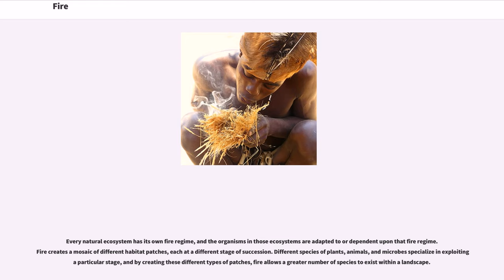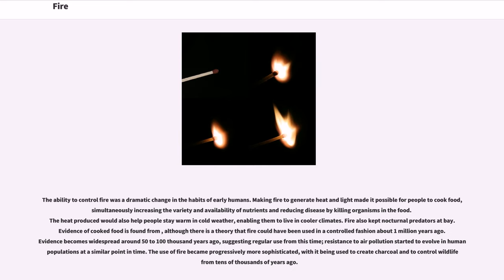The ability to control fire was a dramatic change in the habits of early humans. Making fire to generate heat and light made it possible for people to cook food, simultaneously increasing the variety and availability of nutrients and reducing disease by killing organisms in the food. The heat produced would also help people stay warm in cold weather, enabling them to live in cooler climates. Fire also kept nocturnal predators at bay.